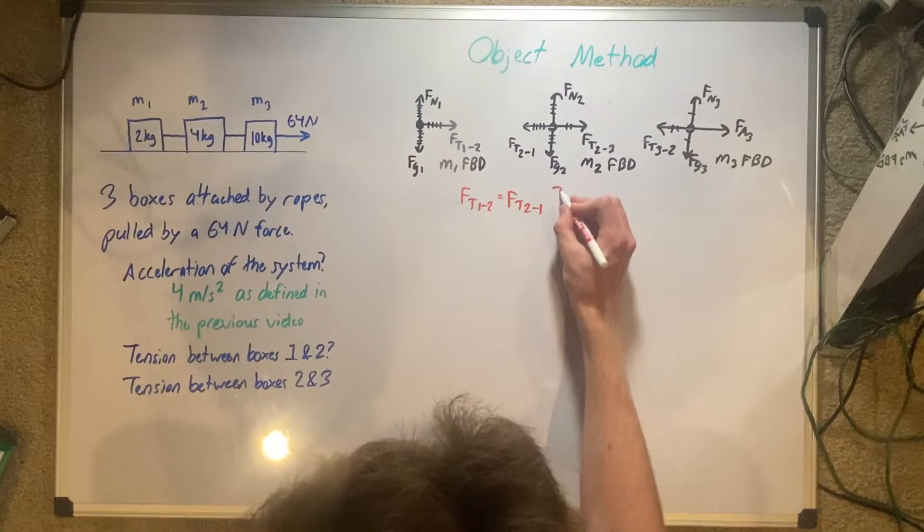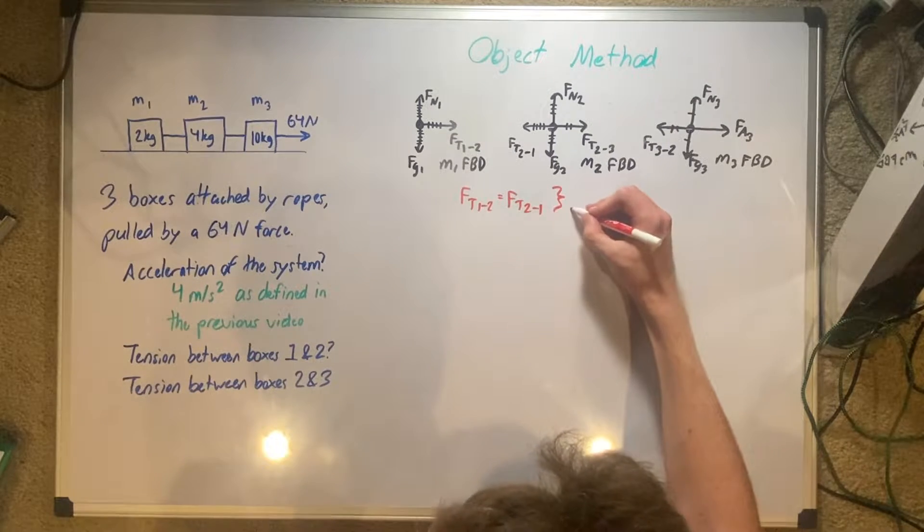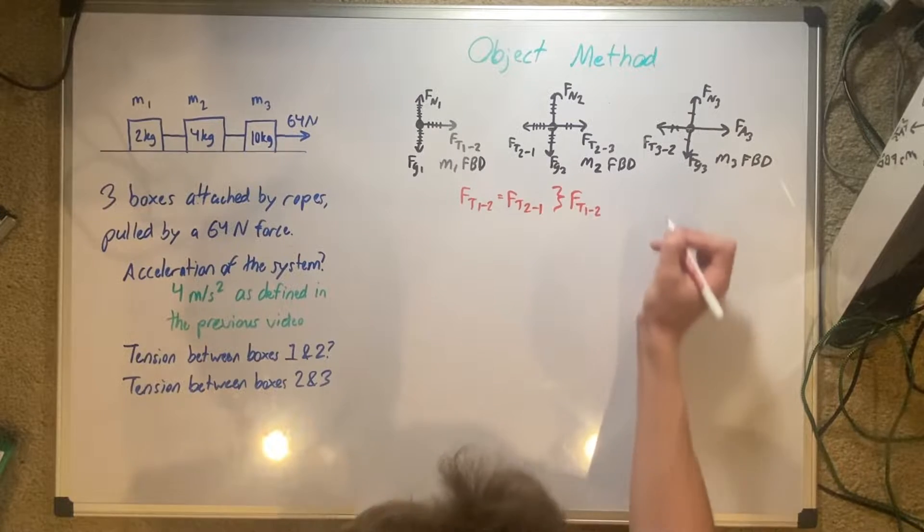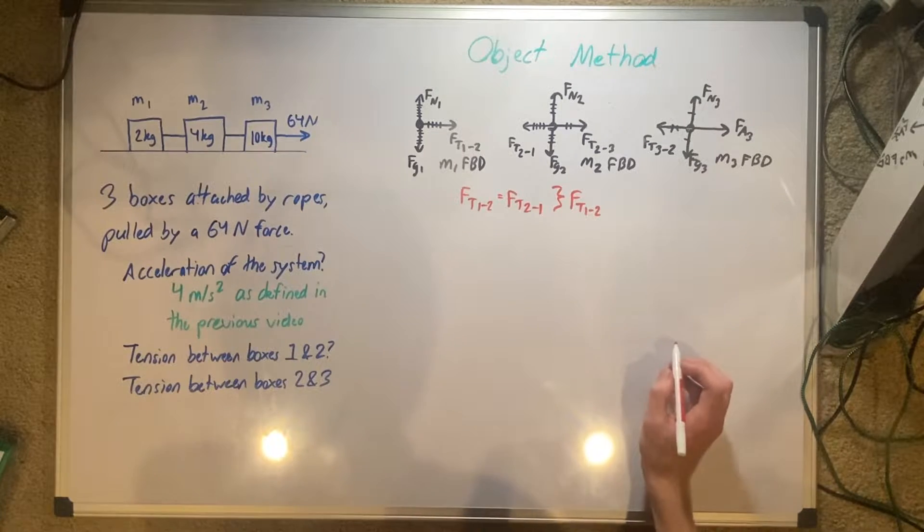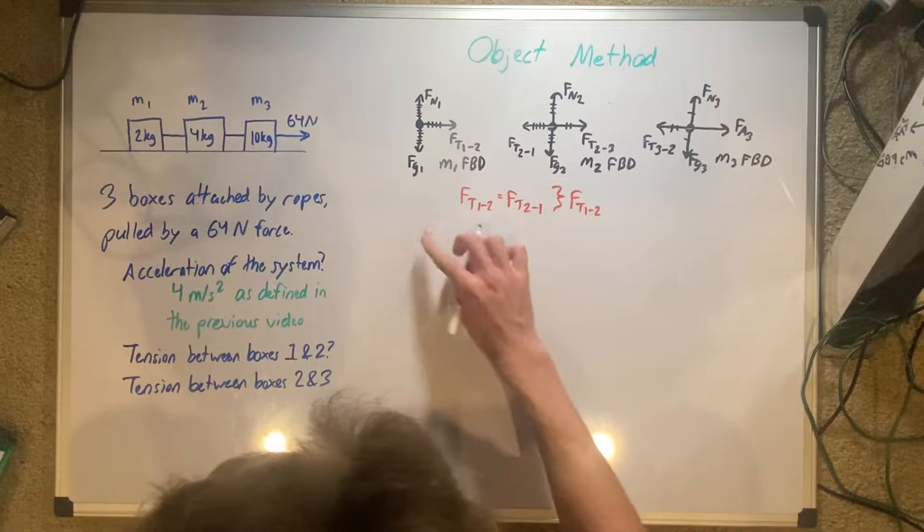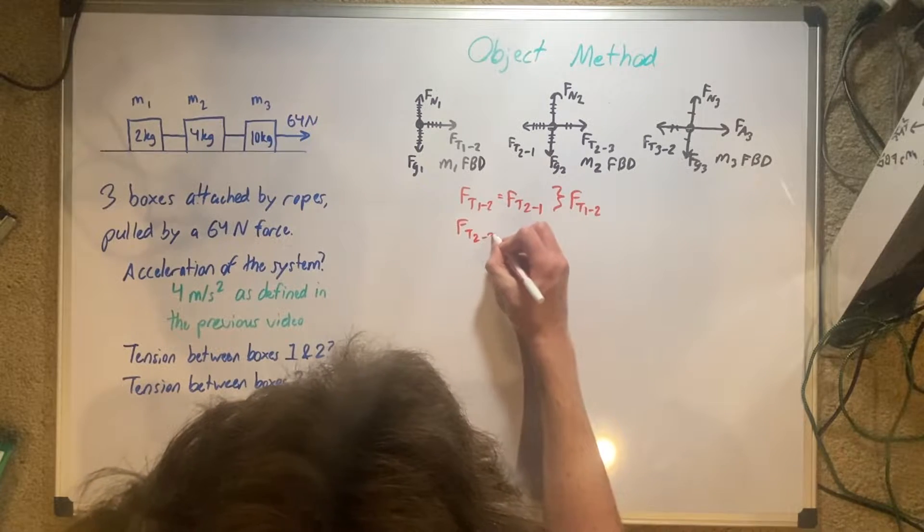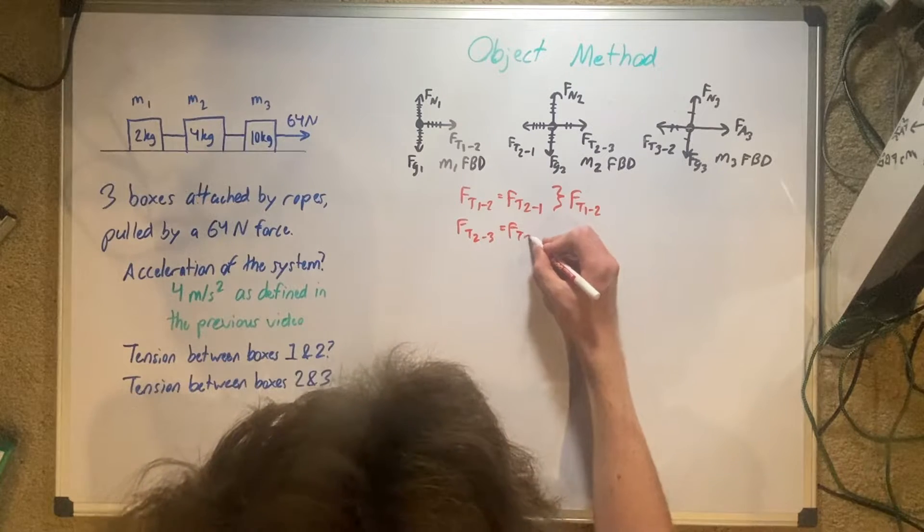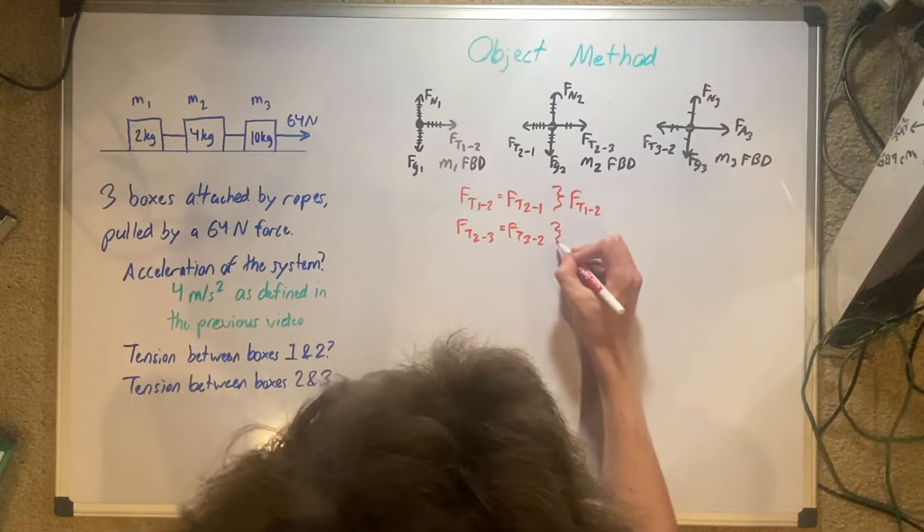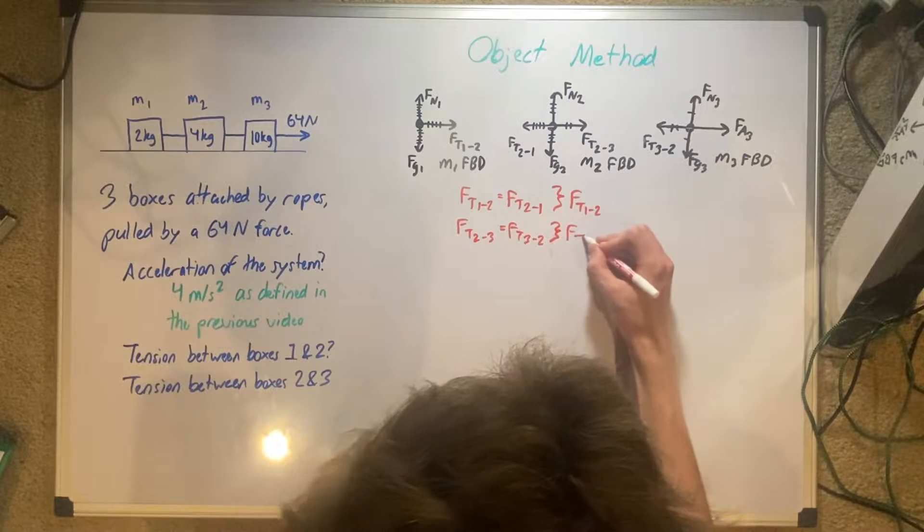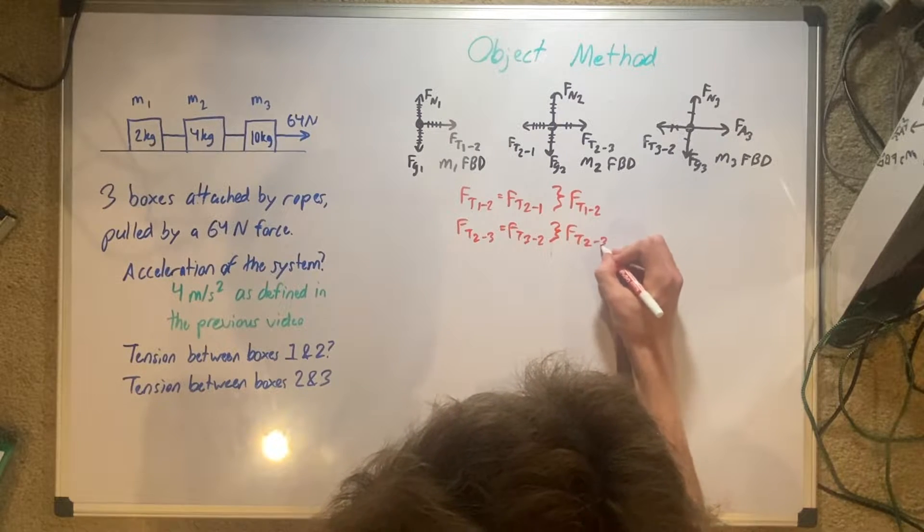We're just gonna set both of those to be the same variable. We're gonna set them both to 1, 2. That same logic applies with force T2 to 3 and force T3 to 2. We're gonna set those both as the same variable as well, force T2 to 3.